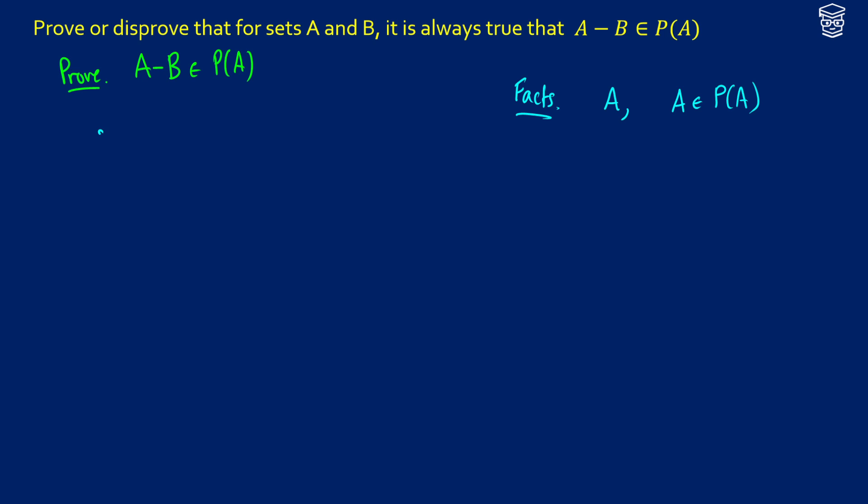So to start this, we're going to use this fact to show that A minus B is therefore going to be an element of the power set of A minus B. Now, this is just a fact we can have on its own, but there's a problem. The problem is we want to get the power set of A.